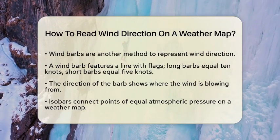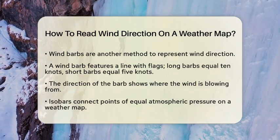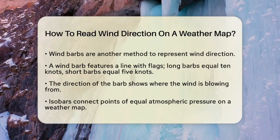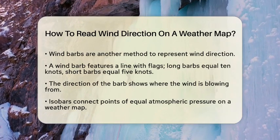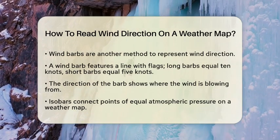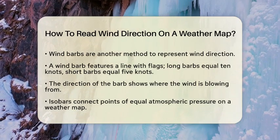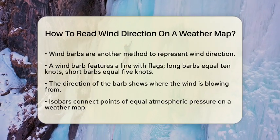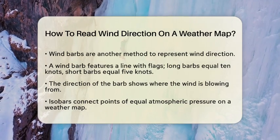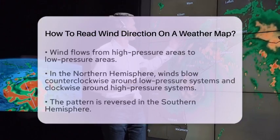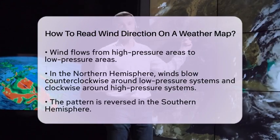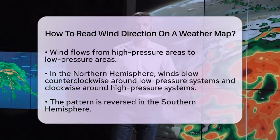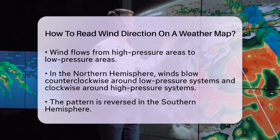Now, let's talk about isobars. These are lines on a weather map that connect points of equal atmospheric pressure. Wind typically blows from high-pressure areas to low-pressure areas. In the northern hemisphere, the wind flows counterclockwise around low-pressure systems and clockwise around high-pressure systems. In the southern hemisphere, this pattern is reversed.